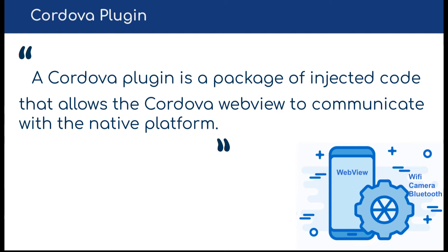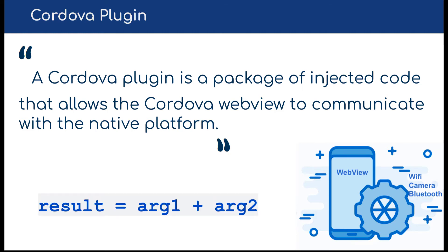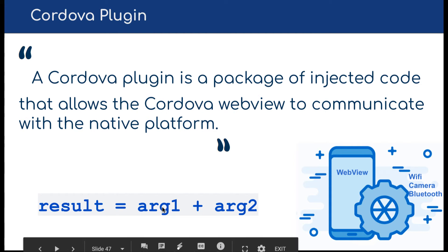I will show the steps to create a dummy plugin for the Android platform, which simply performs a calculation between two integers implemented in Java. It can then be consumed by JavaScript code in our Cordova application. We'll just show: first argument plus second argument equals result.